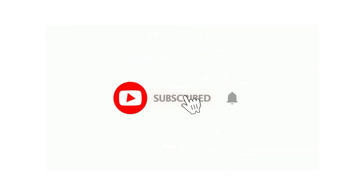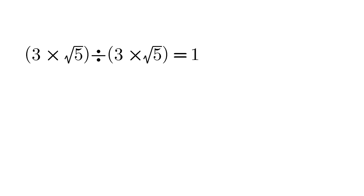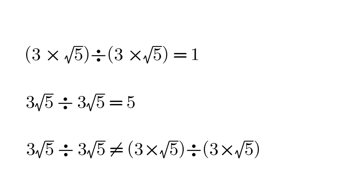From our calculations we got: 3 into root 5, divided by 3 into root 5, equals 1. But 3√5 divided by 3√5 equals 5. Therefore, 3√5 ÷ 3√5 does NOT equal 3 into root 5 divided by 3 into root 5. The notation makes a critical difference.